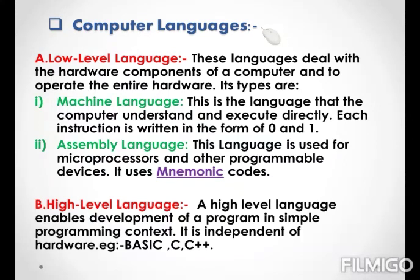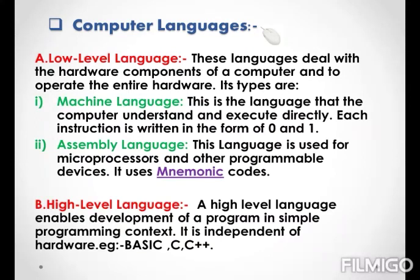The next language is high level language. A high level language enables development of a program in simple programming context. Basically, a high level language is a simple English-level language program and is totally independent of hardware. Examples of high level languages are BASIC, C, and C++. Here we end the second part of chapter 1. Thank you.